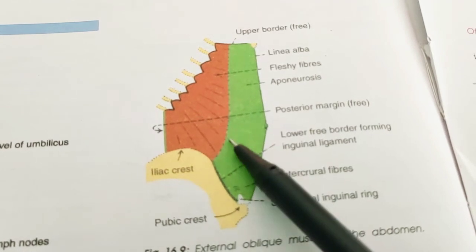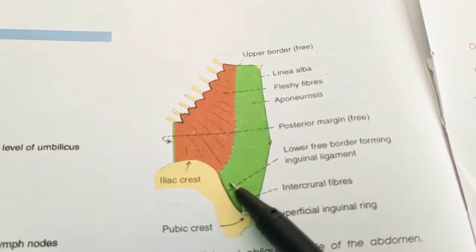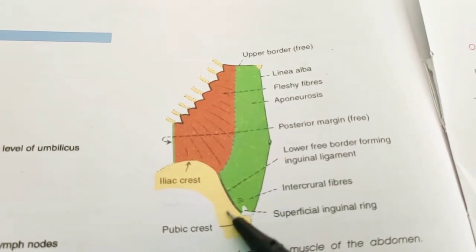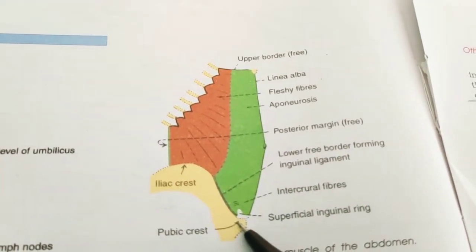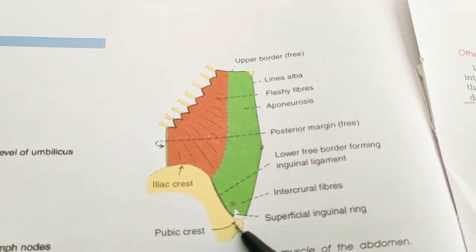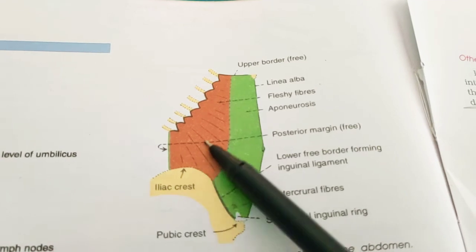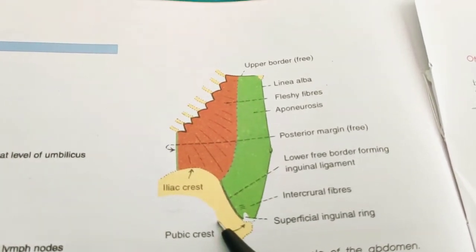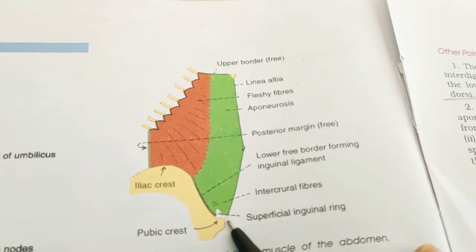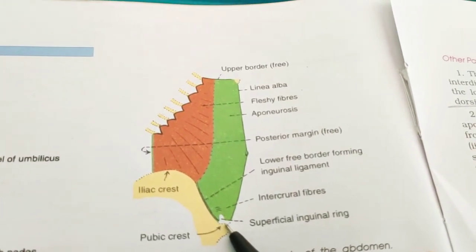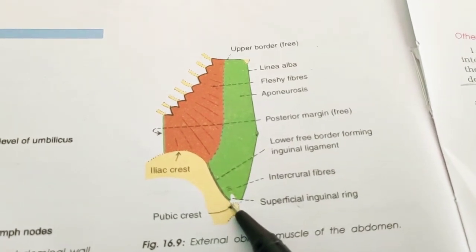Between the anterior superior iliac spine and pubic tubercle, the aponeurosis has a free inferior border, which is folded on itself to form the inguinal ligament. Between the linea semilunaris and the linea alba, the aponeurosis helps to form the anterior wall of the rectus sheath. Just above the pubic crest, the aponeurosis of the external oblique muscle presents a triangular aperture called the superficial inguinal ring.